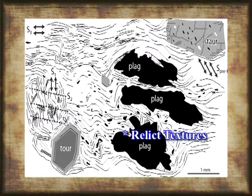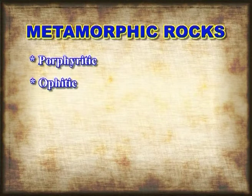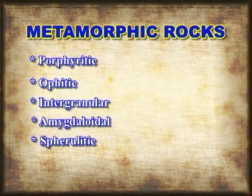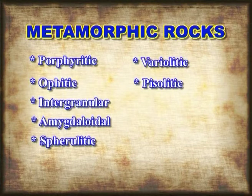Examples of such textures include blasto-porphyritic, blasto-ophitic, blasto-intergranular, blasto-amygdaloidal, blasto-spherulitic, blasto-variolitic, blasto-piezolitic, and blasto-oolitic.